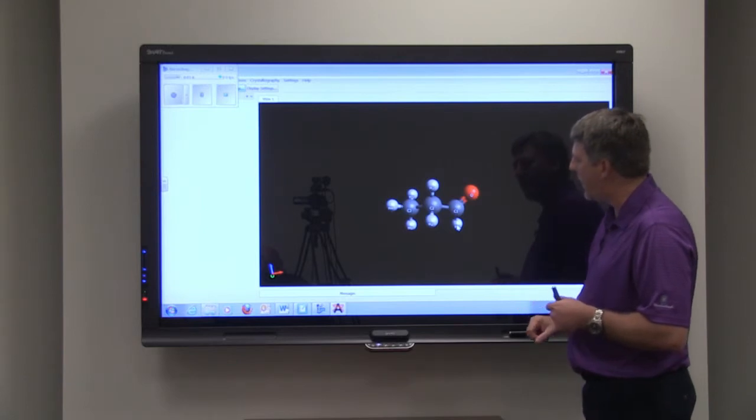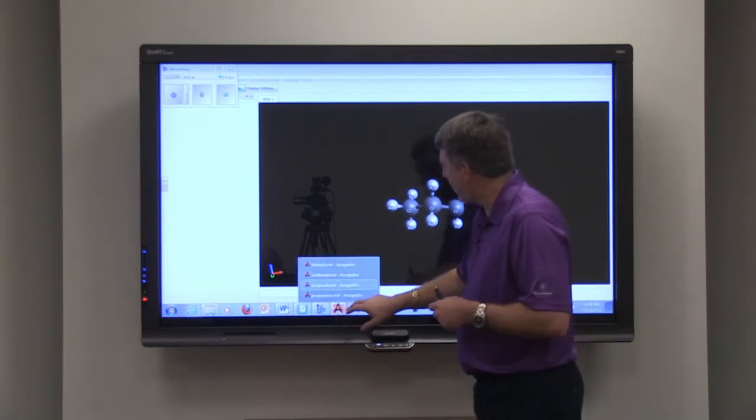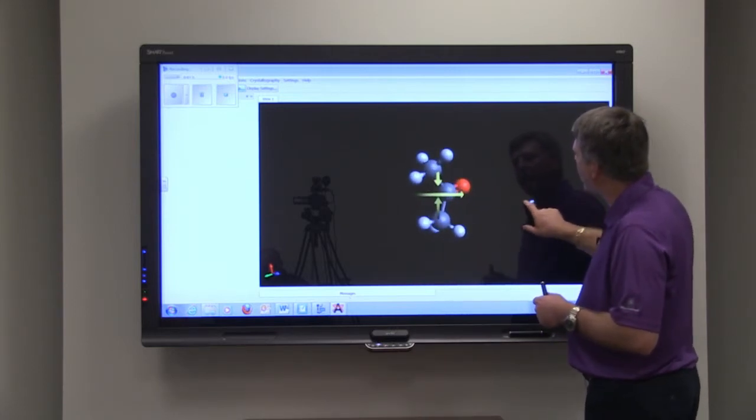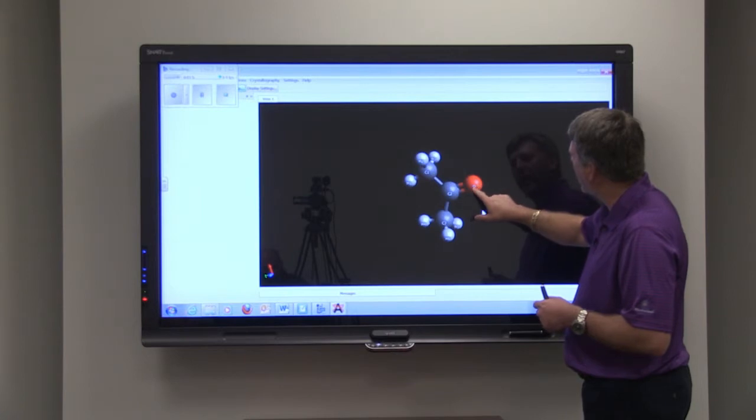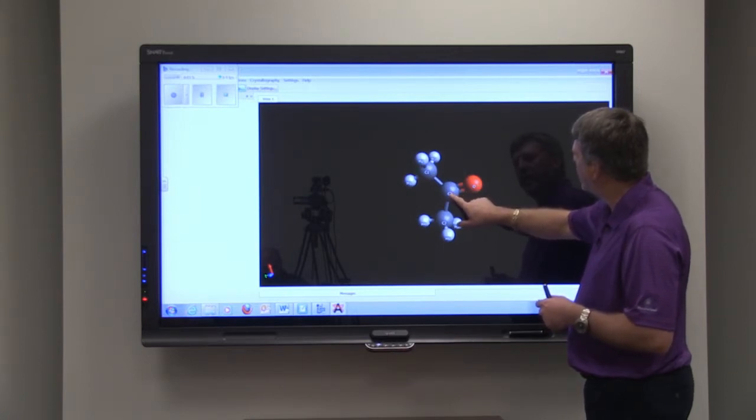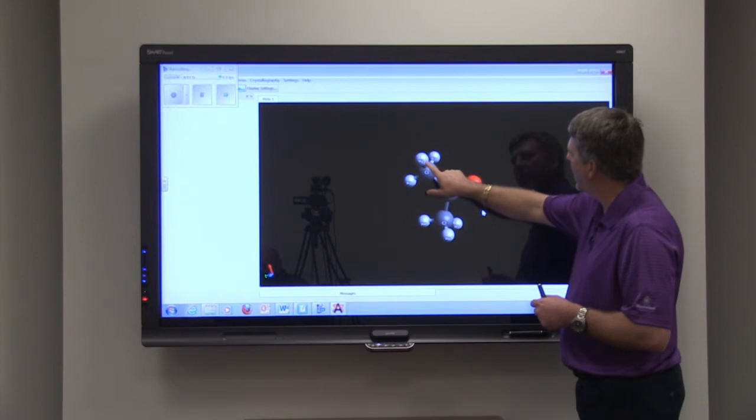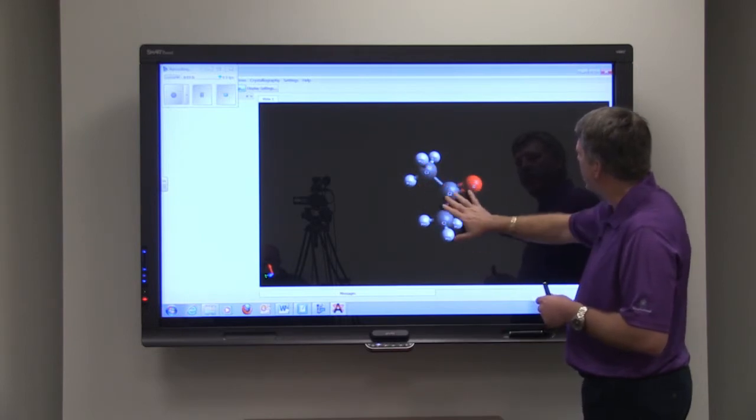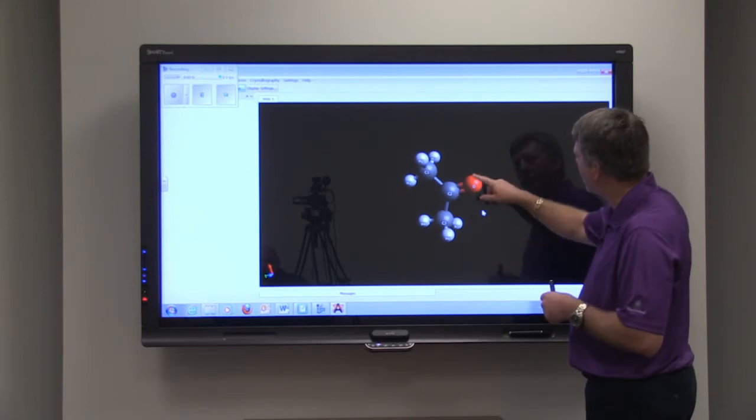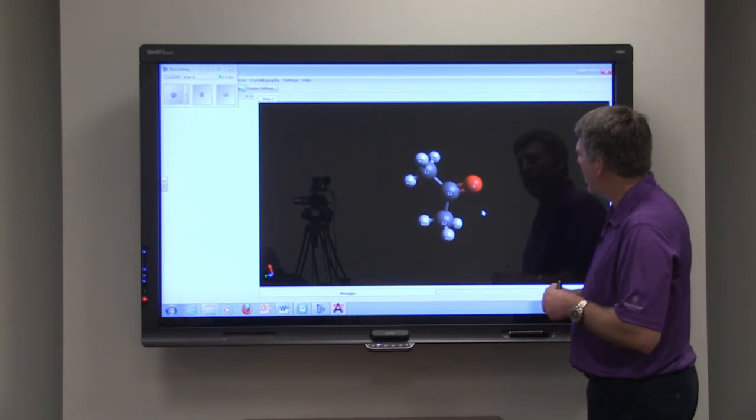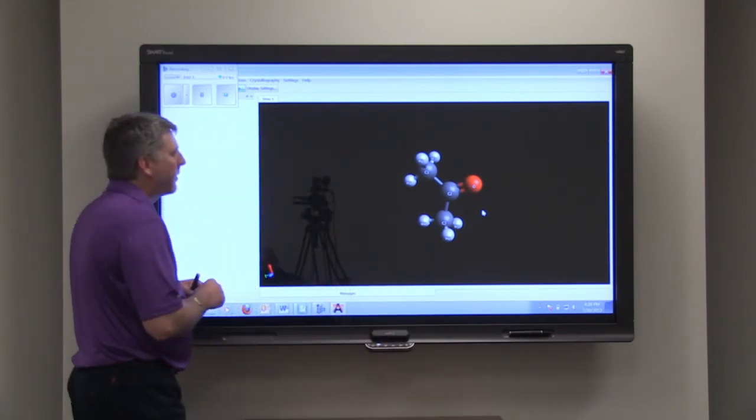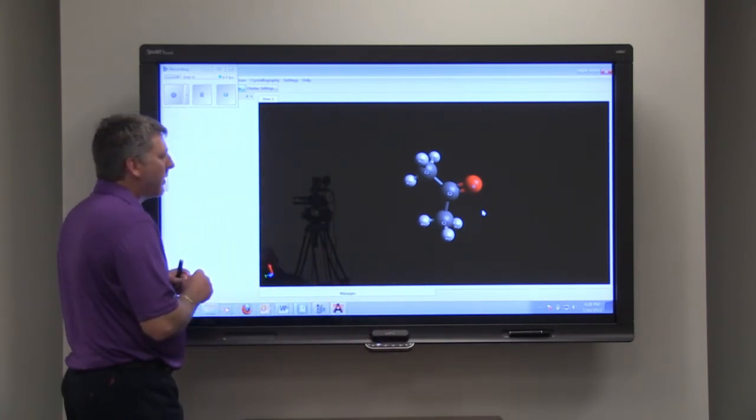Now when we get to three carbons, we can actually have a ketone. So this is propanone, and you can see that our double bonded oxygen is attached to the second carbon. So the first carbon has three hydrogens and it has a bond with the second carbon. The second carbon has the double bonded oxygen, that's our carbonyl group, and then our third carbon with its three hydrogens attached. So those are the first few of the carbonyl group.